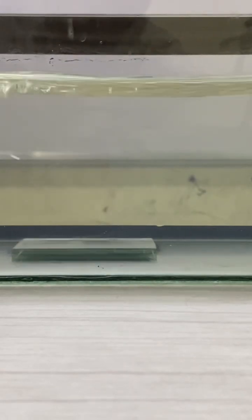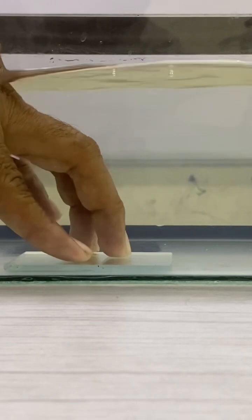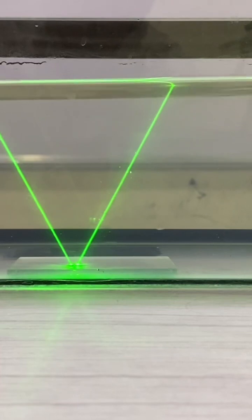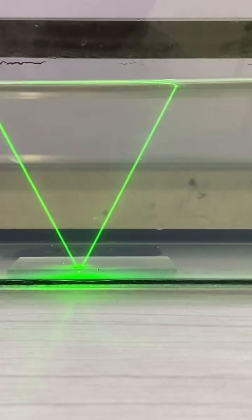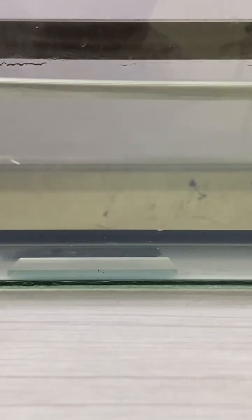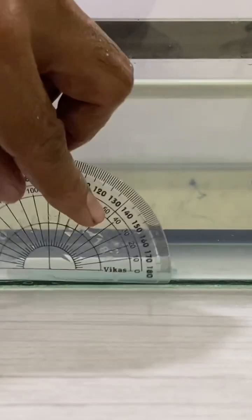Now I am making the laser light to fall on the mirror. You can see incident light ray as well as reflected light ray. Let us measure angle of incidence and angle of reflection.